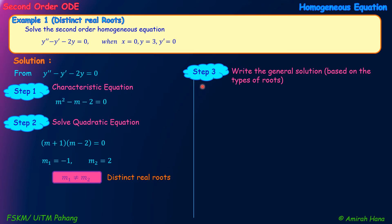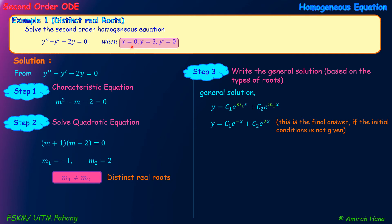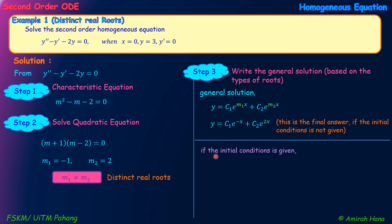Step 3: write the general solution based on the type of root. Since we have distinct real roots, the general solution is Y equals C1 E to the power of M1X plus C2 E to the power of M2X. Substituting M1 equals negative 1 and M2 equals 2, we get the general solution. This is the final answer if no initial condition is given. Since initial conditions are given, we need to find the values of C1 and C2.